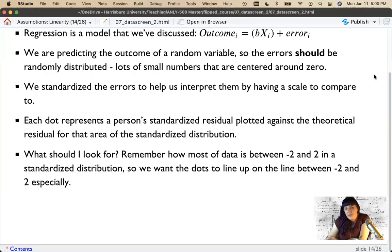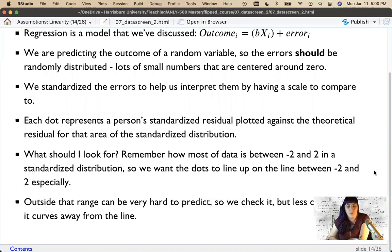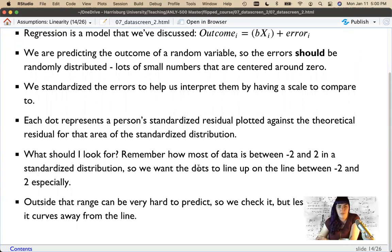And so each dot represents that person's standard residual plotted against the theoretical residual for that area of the distribution. So what should I look for? This is just later when you're looking at the slides, like what was that thing that she said? Here it's written down. So most of the data in a normal distribution is between the negative two, negative two on a Z score and a two. And that's 98% of the data. This time I can math 1% on each side. So we want those dots to line up between two and two. If it curves away past two and two, it's probably fine. So we want to check those, but we're less concerned if they curve away from the line.